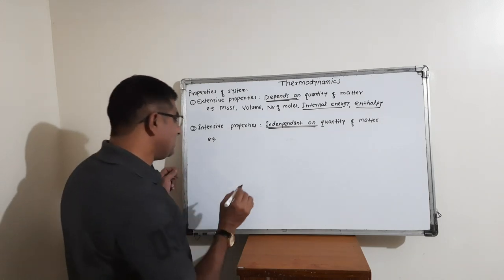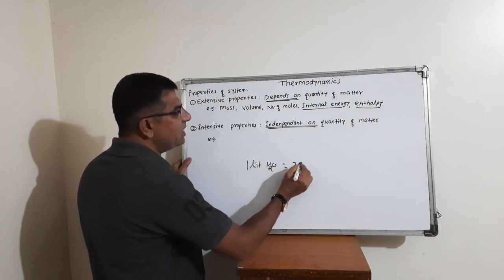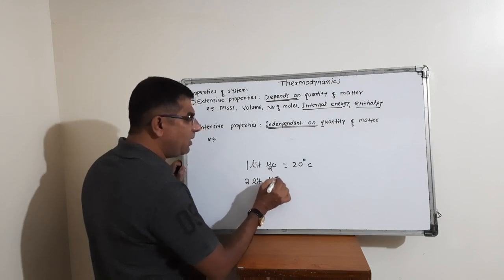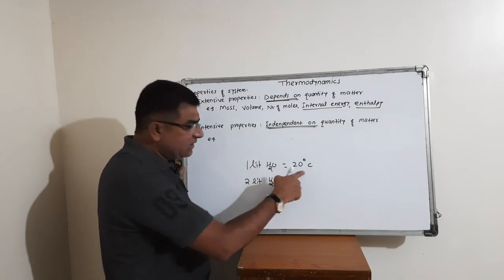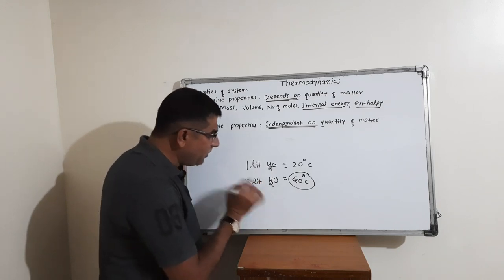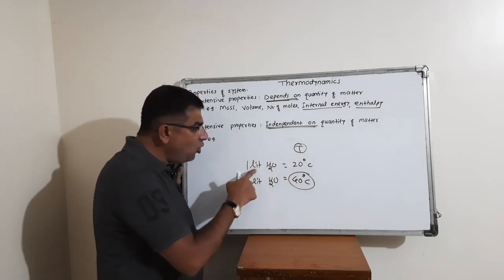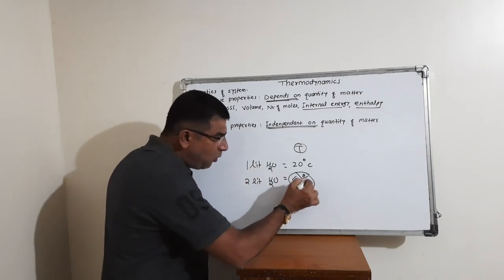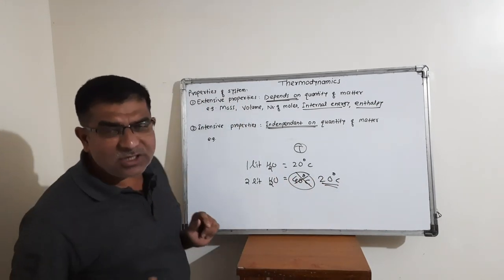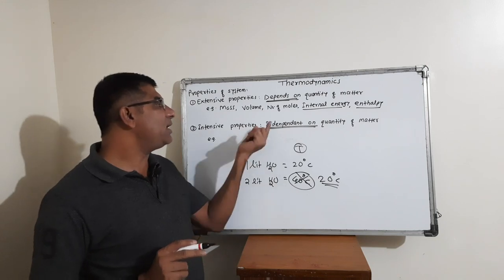For example, if you have 1 liter of water at an initial temperature of 20 degrees Celsius, and you consider 2 liters of the same water, the temperature does not become 40 degrees Celsius — it remains 20 degrees Celsius. Temperature is a property which does not depend on quantity of matter, so it is called an intensive property.